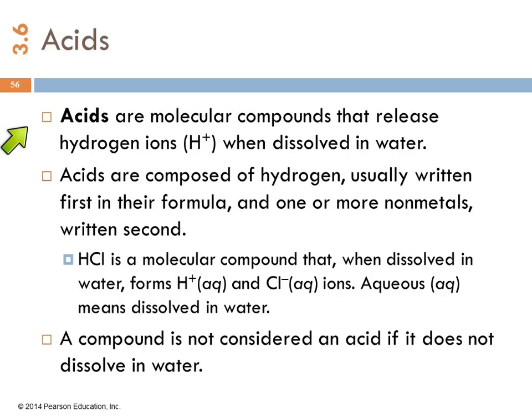They get their own set of nomenclature rules. Acids are composed of hydrogen, which is generally written first in the formula, and then one or more nonmetals written second. This convention allows us to easily recognize acids from their formulas, because if it starts with H, it's an acid.